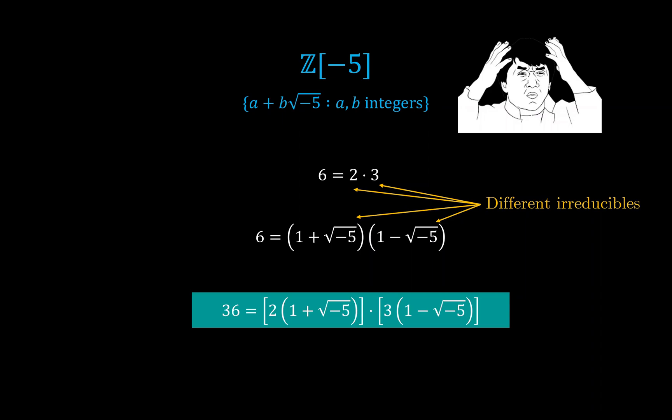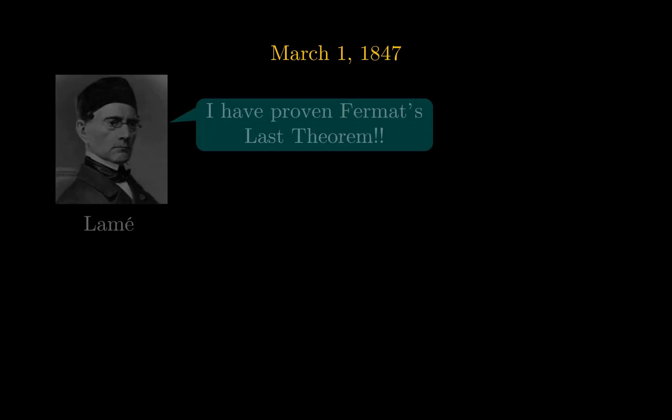Now we can see where our key argument breaks down if we don't have unique factorization. Because here we can write the square number 36 as a product of two coprime numbers, none of which are square numbers. So on March 1, 1847,